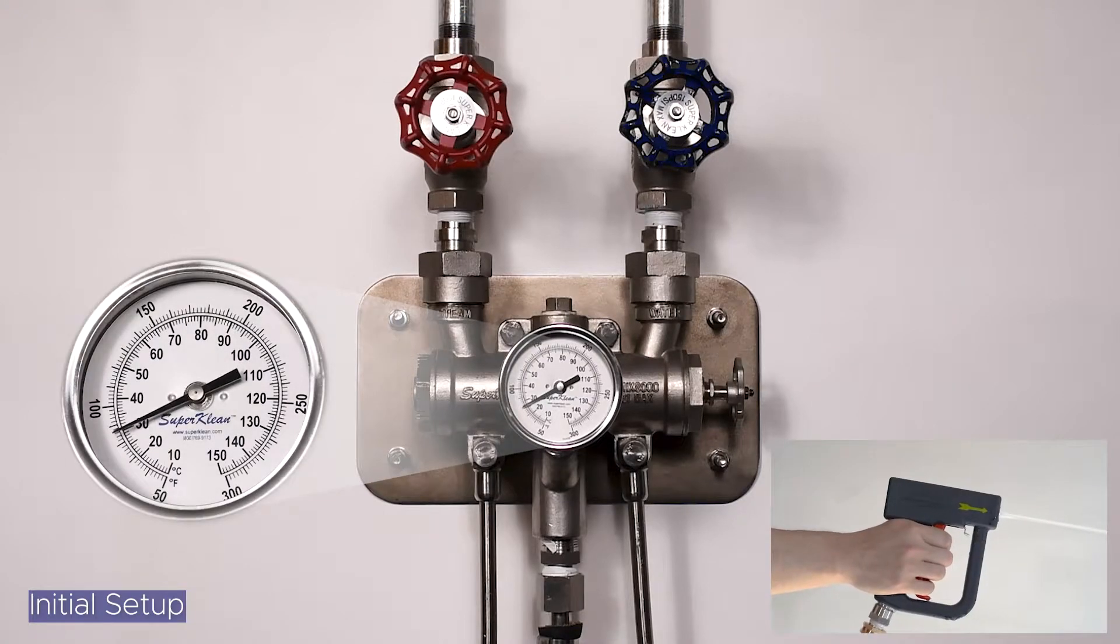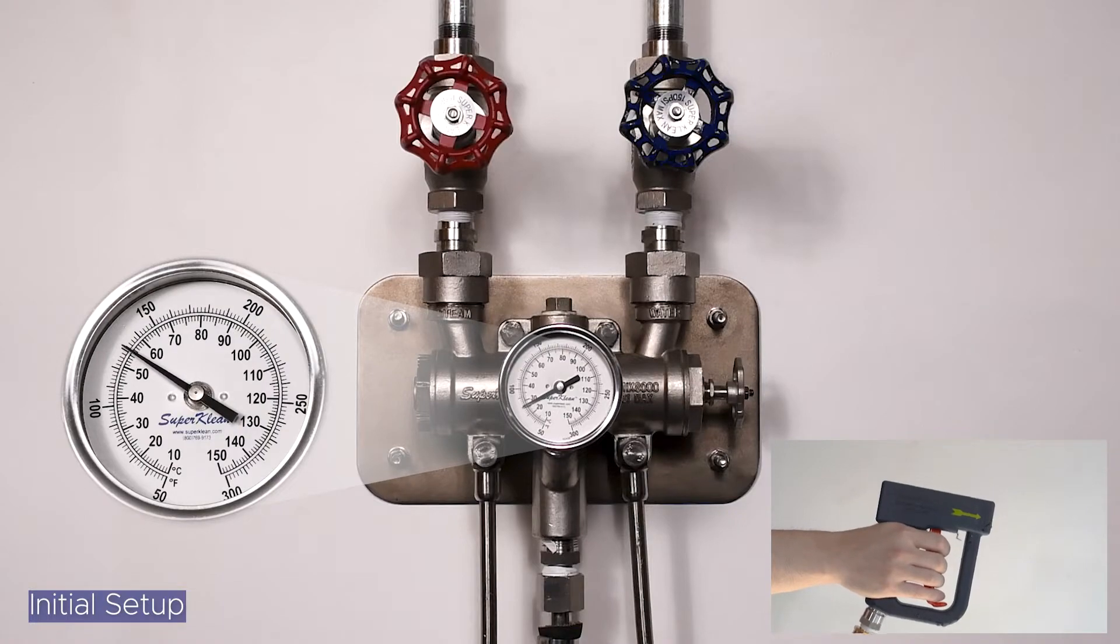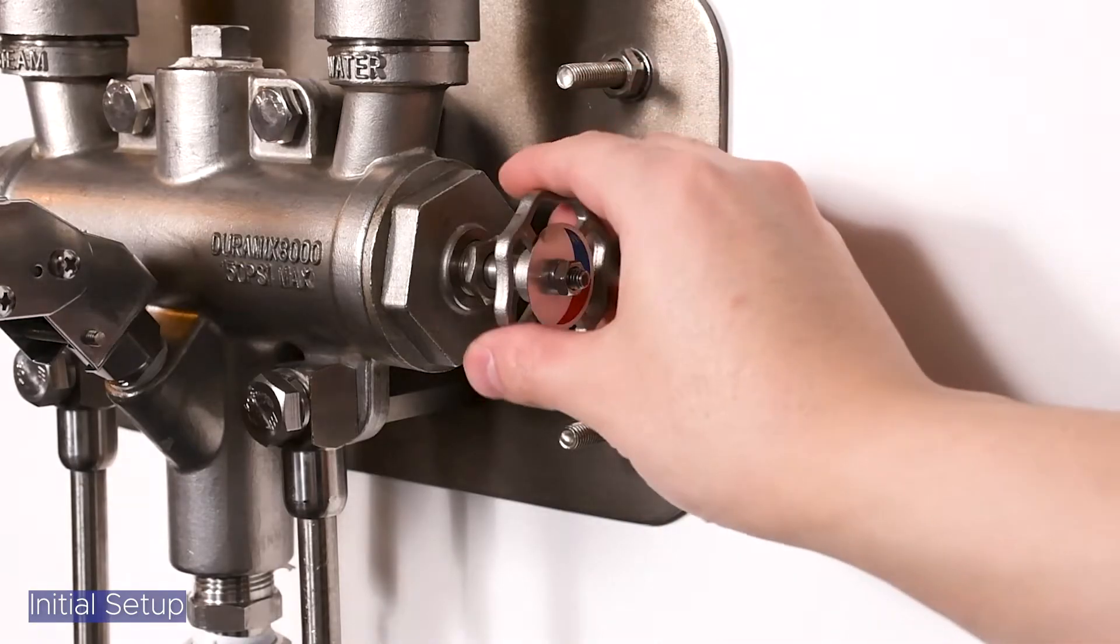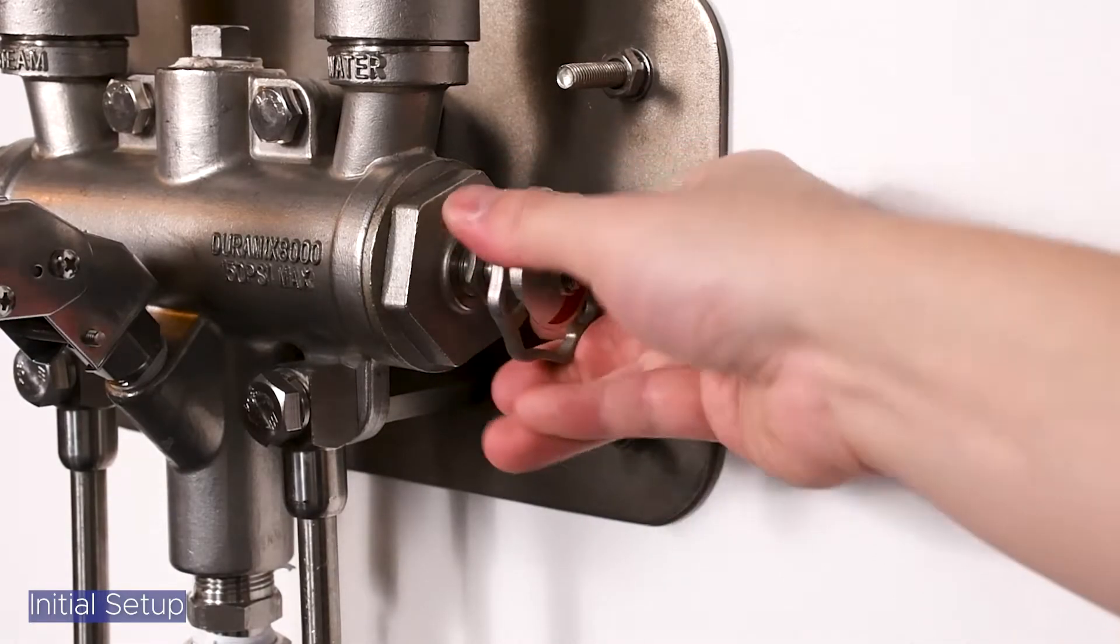Begin spraying water from the nozzle, continuing to spray throughout the course of the temperature adjustment of the unit. To adjust the water temperature output, use the temperature adjustment hand wheel, turning it clockwise to increase the water temperature.